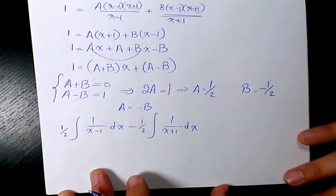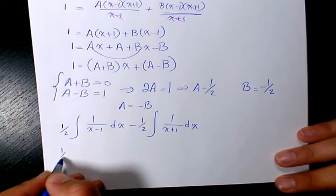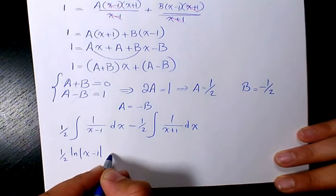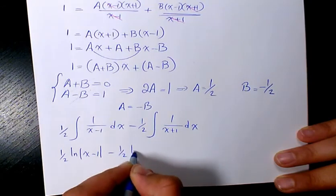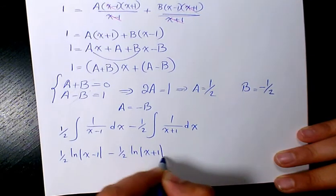So here, we need to do the integration. It's going to be 1 over 2 ln x minus 1 minus 1 over 2 ln x plus 1 plus C.